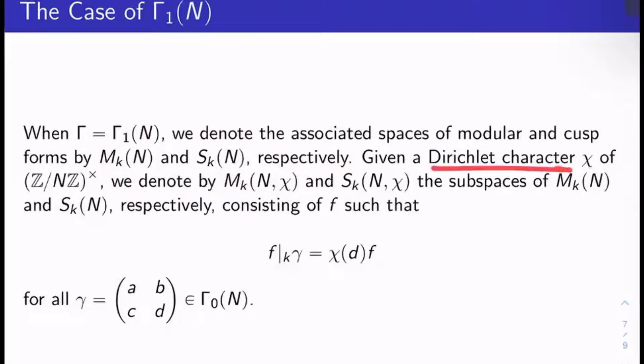If you give me a Dirichlet character χ of (Z/NZ)×, so the group of units in Z mod NZ, a Dirichlet character is just a multiplicative homomorphism from this group to C*. We'll denote by M_k(N,χ) and S_k(N,χ), the subspaces, certain special subspaces of M_k(N) and S_k(N) respectively. These spaces are usually called modular forms with character χ or cusp forms with character χ. These are going to consist of f here or here respectively, such that f bar sub k of γ is nothing but χ(d) times f, where γ is a, b, c, d any matrix in Γ_0(N).